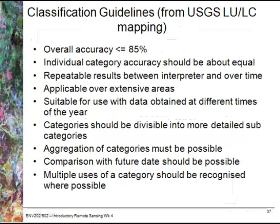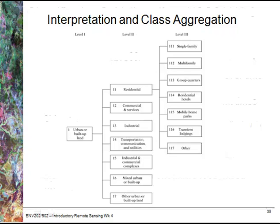You also need to be able to aggregate categories or divide them into smaller categories, ensure you can compare with a future date by accounting for seasonal variations, and have multiple uses of a particular category. An example of class aggregation starts at level one with urban or built-up land. At level two, that's broken down into a large number of classes. You can then aggregate back up to level one, or go down to level two for finer scale detail.